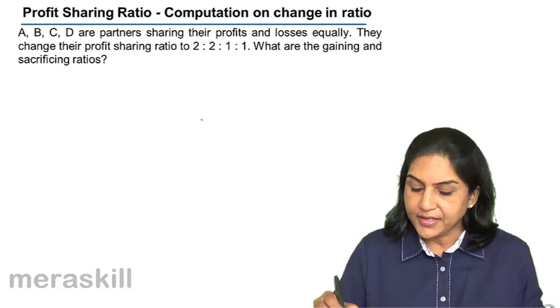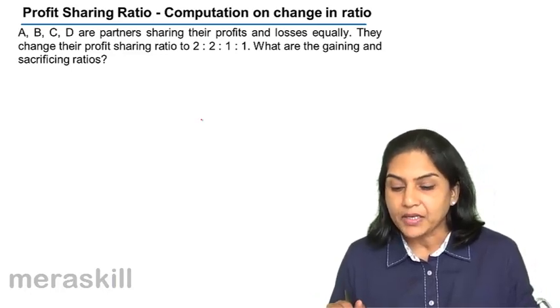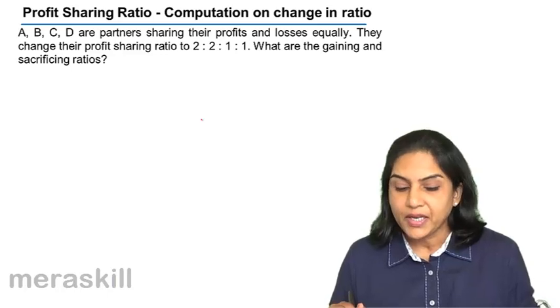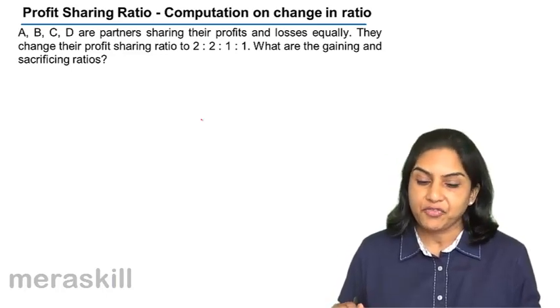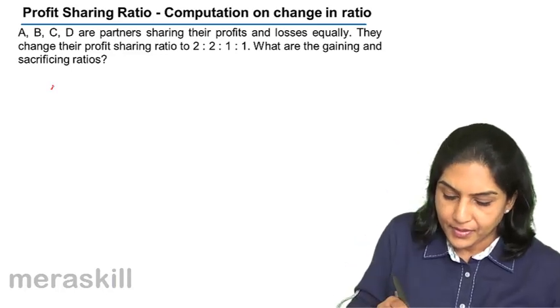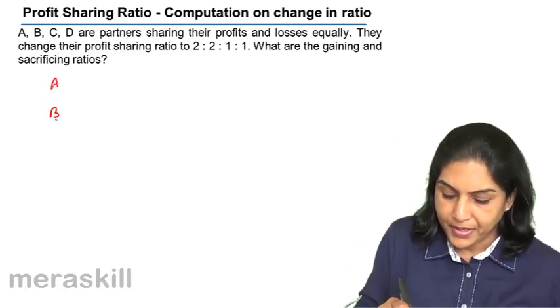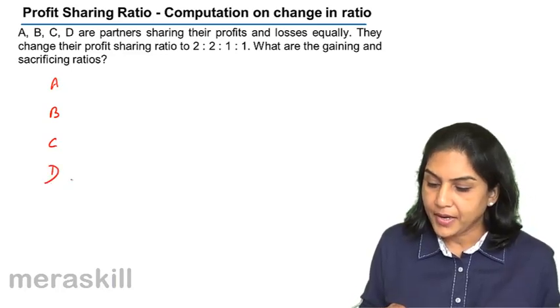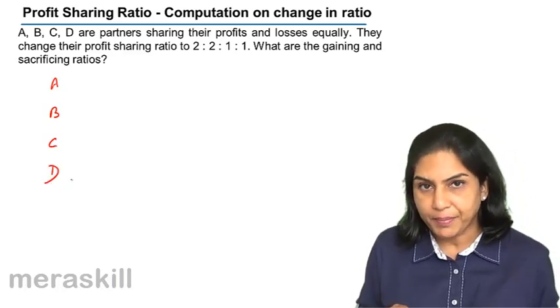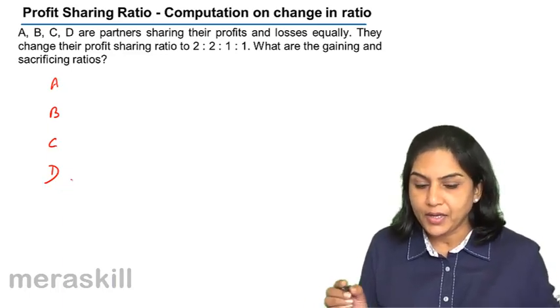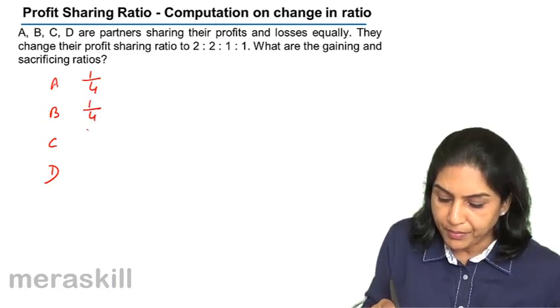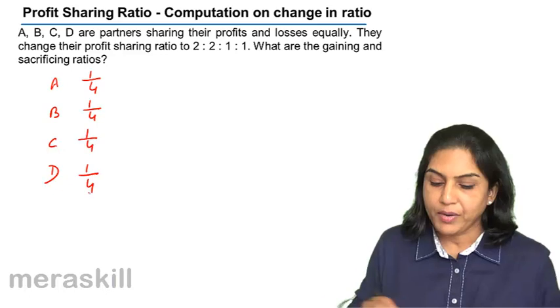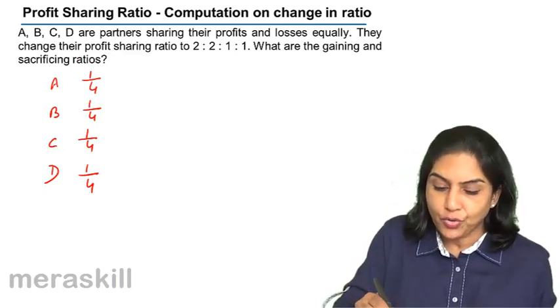Let us take another example. A, B, C, and D are partners sharing profits and losses equally. They change their profit sharing ratio to 2:2:1:1. What are the gaining and sacrificing ratios? A, B, C, and D. So they are all equal partners. 4 people, share of 1 divided by 4. So each one shares 1 by 4, 1 by 4, 1 by 4, and 1 by 4. So this was the old ratio.